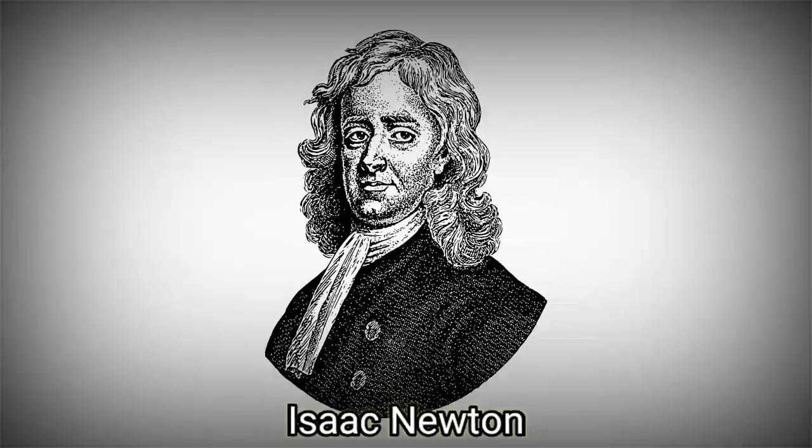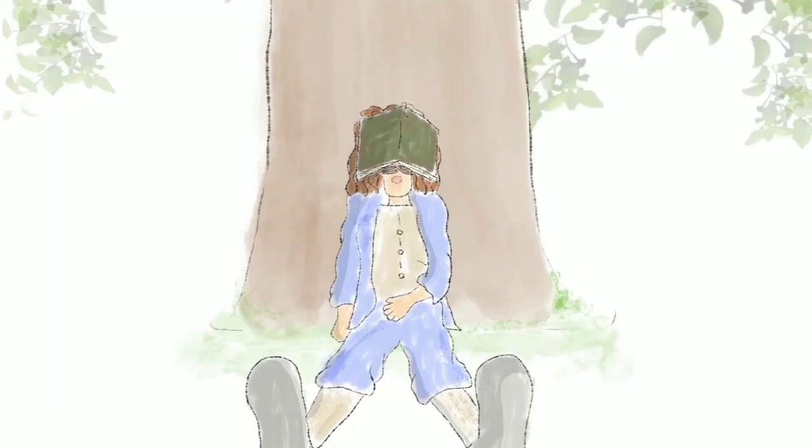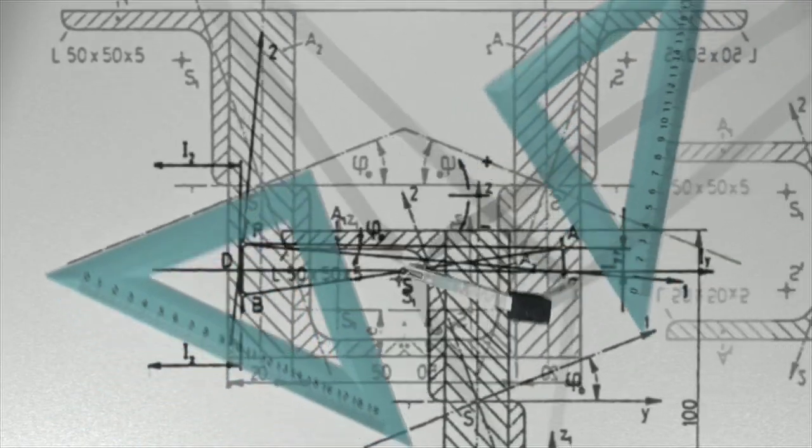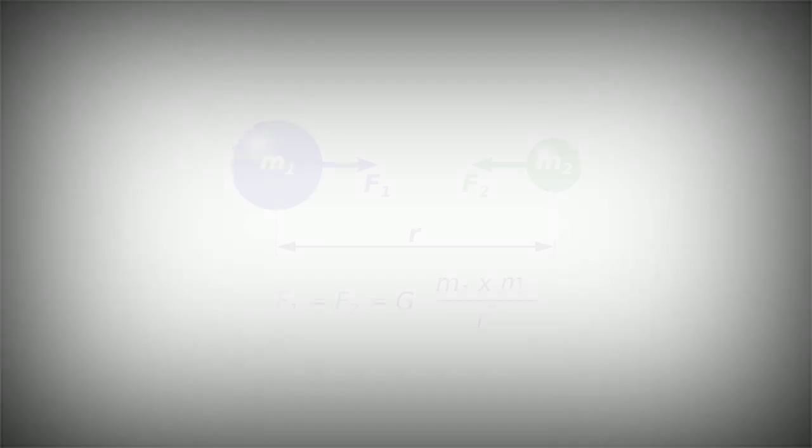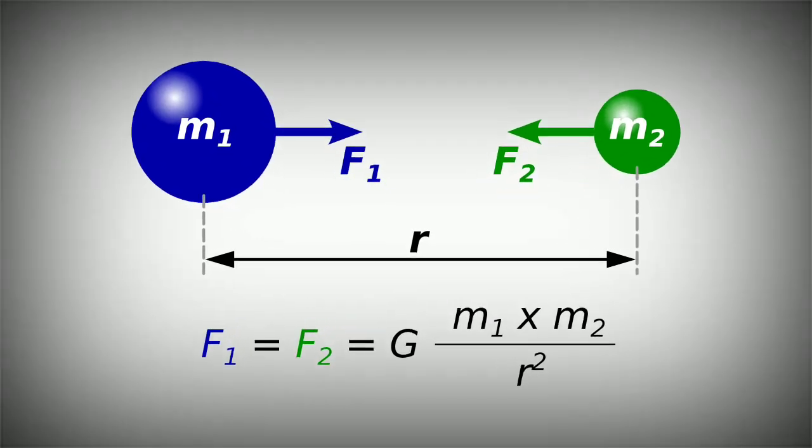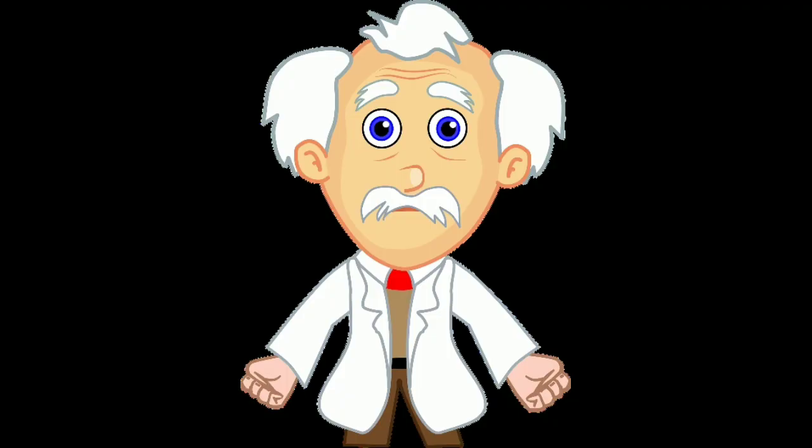Sir Isaac Newton was the first to propose the idea of gravity, supposedly inspired by an apple falling from a tree. He described gravity as a literal attraction between two objects. According to Newton's law of gravity, it states that the gravitational force between two bodies is proportional to the product of their masses and inversely proportional to the square of the distance between them.